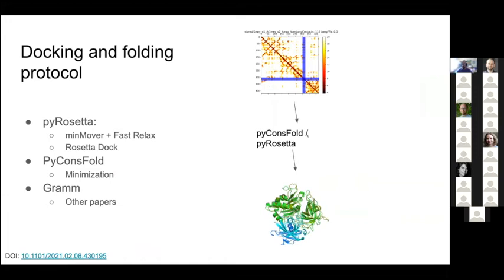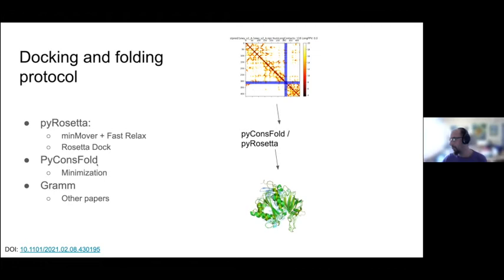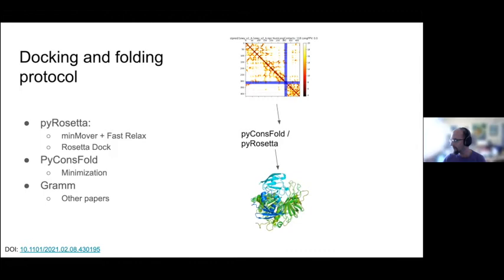We can use Rosetta or CNS (PyRosetta), which are quite standard and take a couple of hours to run. Rosetta is slightly better but slightly slower. We can also use traditional docking methods — taking fixed structures and using the predicted contacts as constraints. In our tests, this doesn't provide a significant improvement, but we'll come back to that.